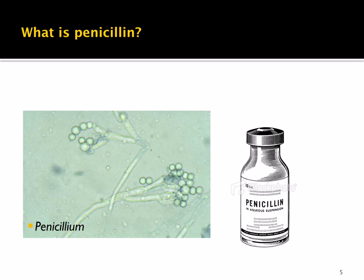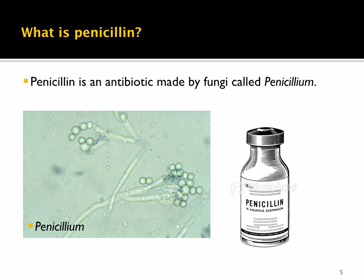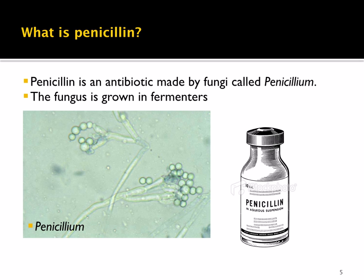So, what is penicillin? Penicillin is an antibiotic made by the fungi called penicillium. The fungus is grown in fermenters. Note that penicillin is not made by an enzyme — it is not an enzyme itself. But this topic ties in nicely because, like enzymes, penicillin is produced using fermenters.